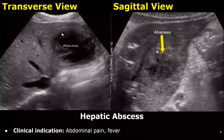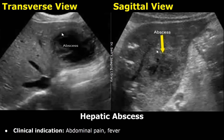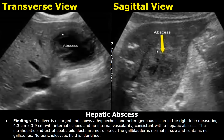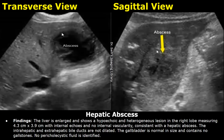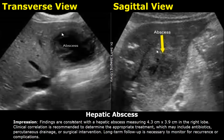A patient with hepatic abscess can present with abdominal pain and fever. In the findings, write a hypoechoic and heterogeneous lesion, mention its location and size, and mention the presence of internal echoes and no internal vascularity, as an abscess will not have any internal vascularity on color Doppler. These findings are consistent with hepatic abscess. Similarly, in the impression, write that findings are consistent with hepatic abscess, write the size and location, and then write about clinical correlation.